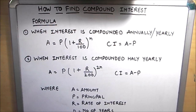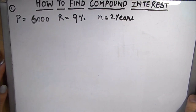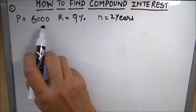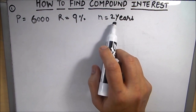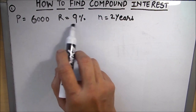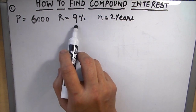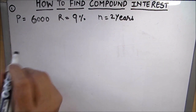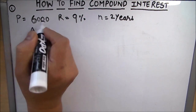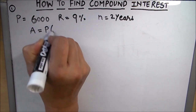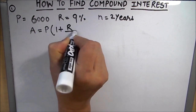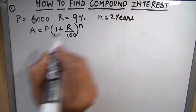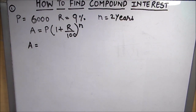Let's get started with our first example where the interest is compounded yearly. Our principal amount is 6000 rupees, compounded for 2 years at a rate of interest of 9% annually. We need to find the compound interest. We will use the formula A equals P times 1 plus r over 100 raised to power n, and then find CI equals Amount minus Principal.